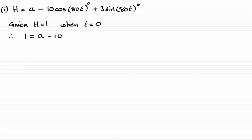And when it comes to the sine of zero, well the sine of zero is zero. So we can forget that term. So clearly if I add 10 to both sides I end up with a equaling 11.